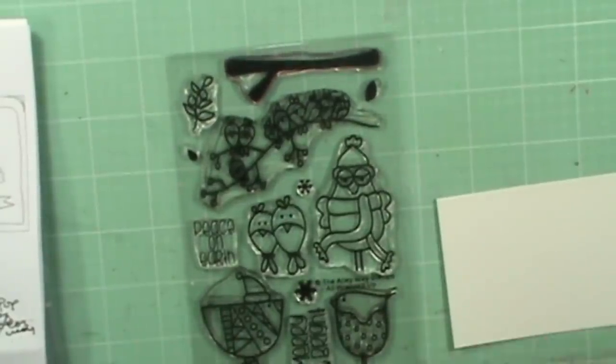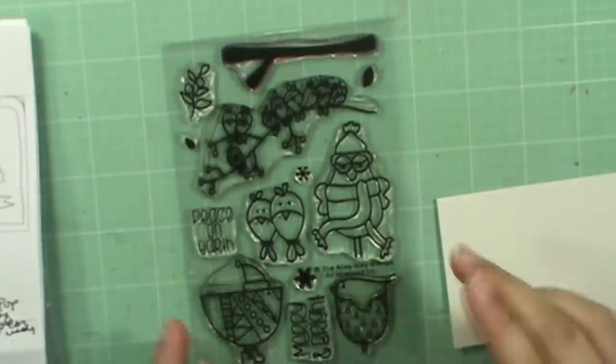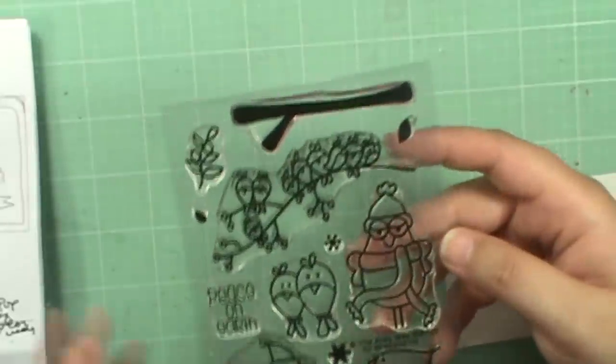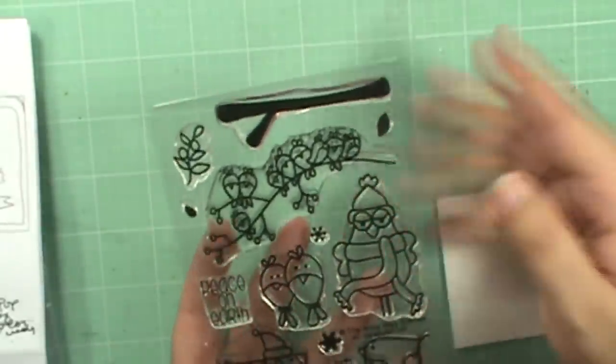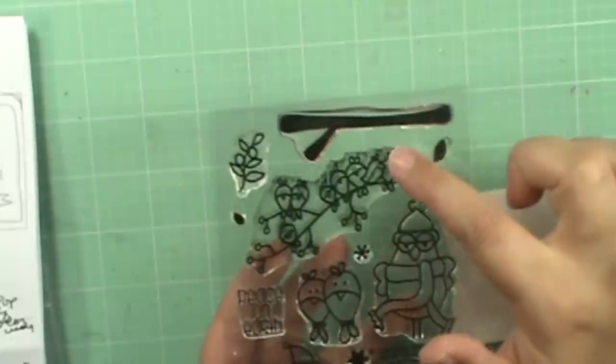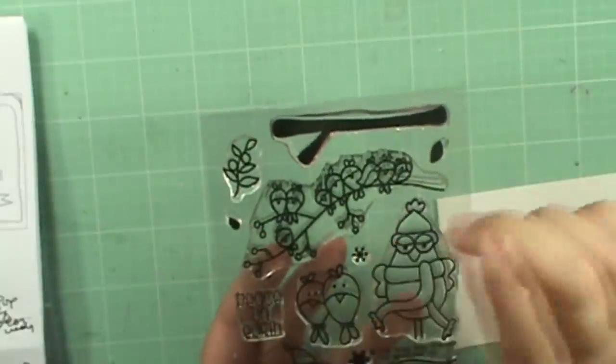Hey everyone, I'm super excited to show you this new set called All Wrapped Up. It's a Christmas set and of course it has some birds on it because you know me and birds. There are lots of really cute ways you can use this. Here's the branch and there's a few leaves.